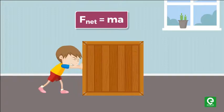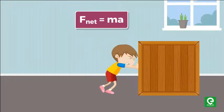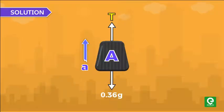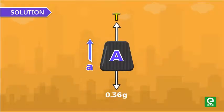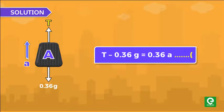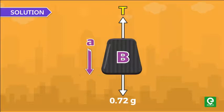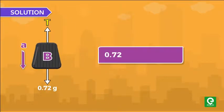Applying this on block A gives us tension minus 0.36g equal to 0.36a. Let's call this equation 1. Similarly, for block B we can write 0.72g minus tension equal to 0.72a. Let's call this equation 2.